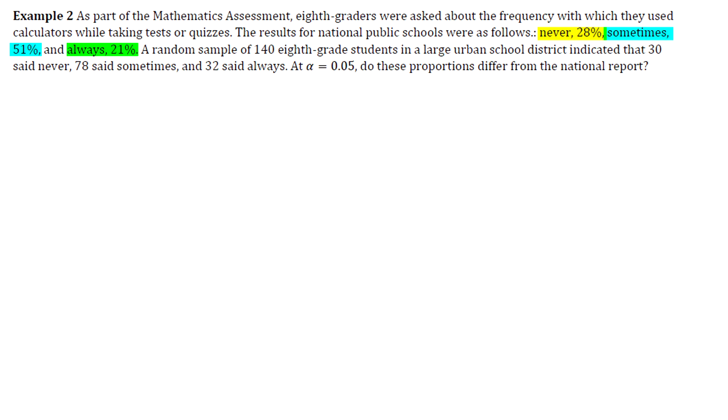A random sample of 140 eighth grade students in a large urban school district indicated that 30 said never, 78 said sometimes, and 32 said always. Alpha is 0.05 and we want to answer the question, do these proportions differ from the national report?